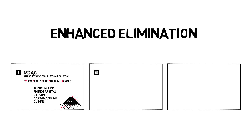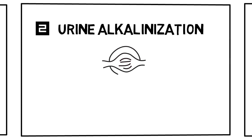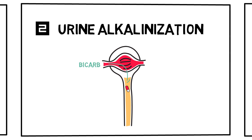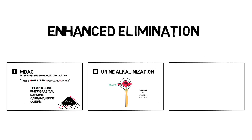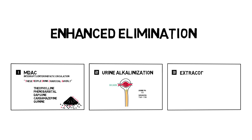The second way of enhanced drug elimination is alkalinizing the urine. Ionized molecules are more water soluble than their non-ionized counterparts, while non-ionized molecules are better at crossing cell membranes. If a drug is filtered through the glomerulus of the kidney, making the urine more alkaline with sodium bicarbonate ionizes weak acids like aspirin and phenobarbital, keeping them in the urine and out of our bloodstream. Aim for a urine pH of 7.5 and a serum pH between 7.45 and 7.55. Beware of hypokalemia.